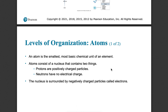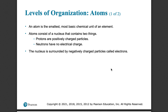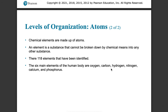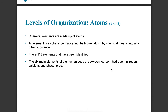You start at the smallest, which is atoms. Think of the periodic table of elements — those particular atoms composed of protons and neutrons. We have 118 elements that have been identified, so 118.